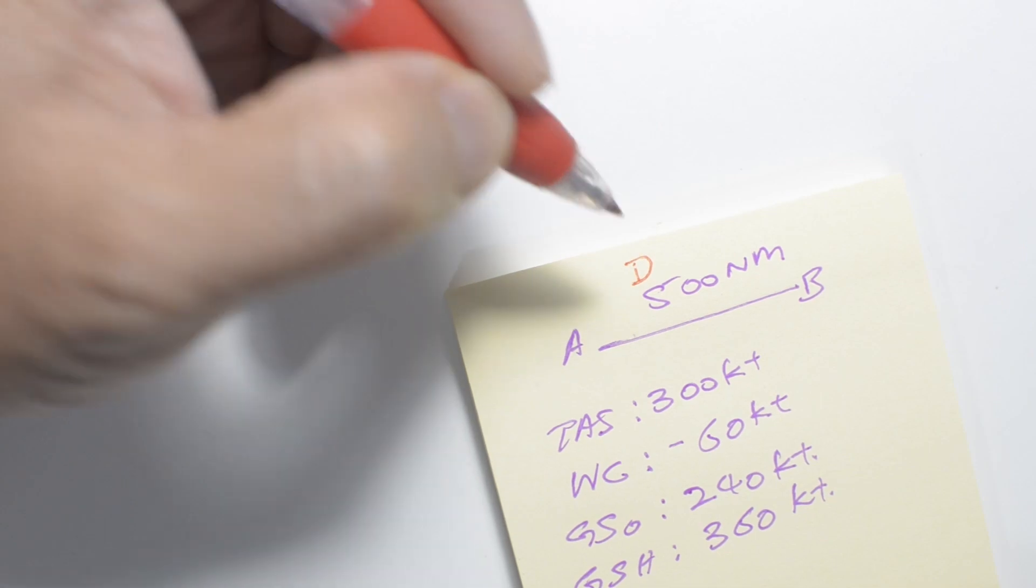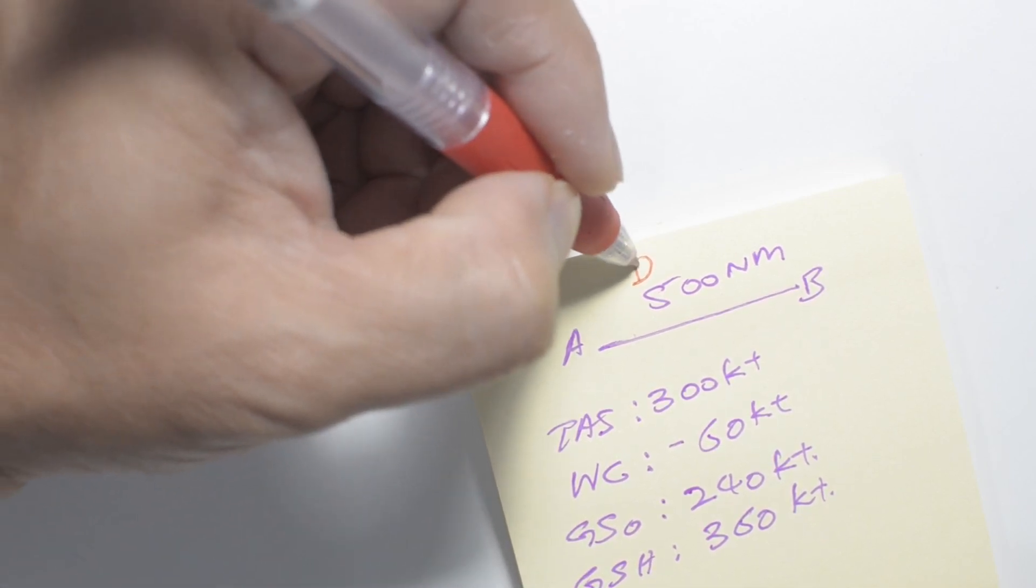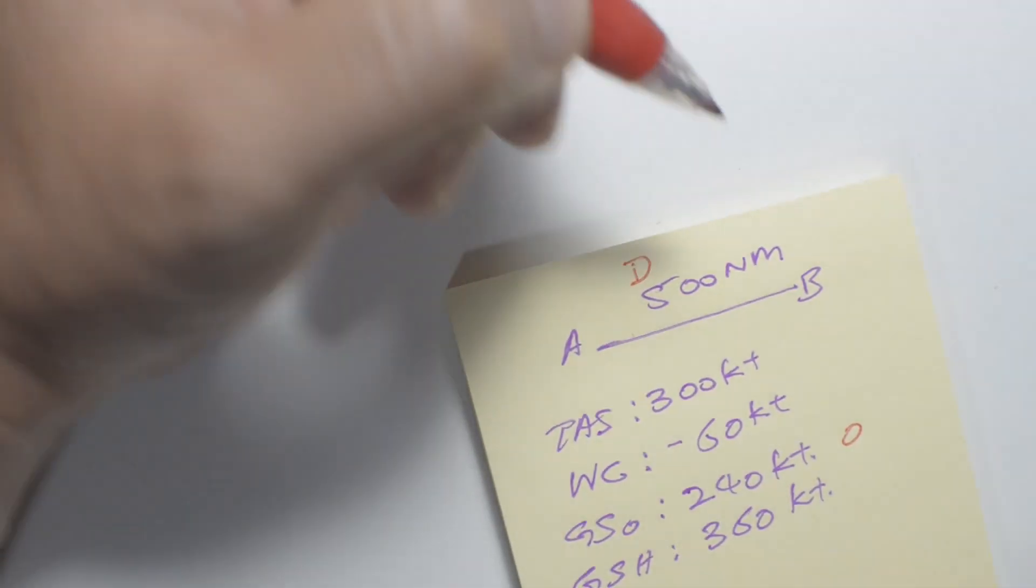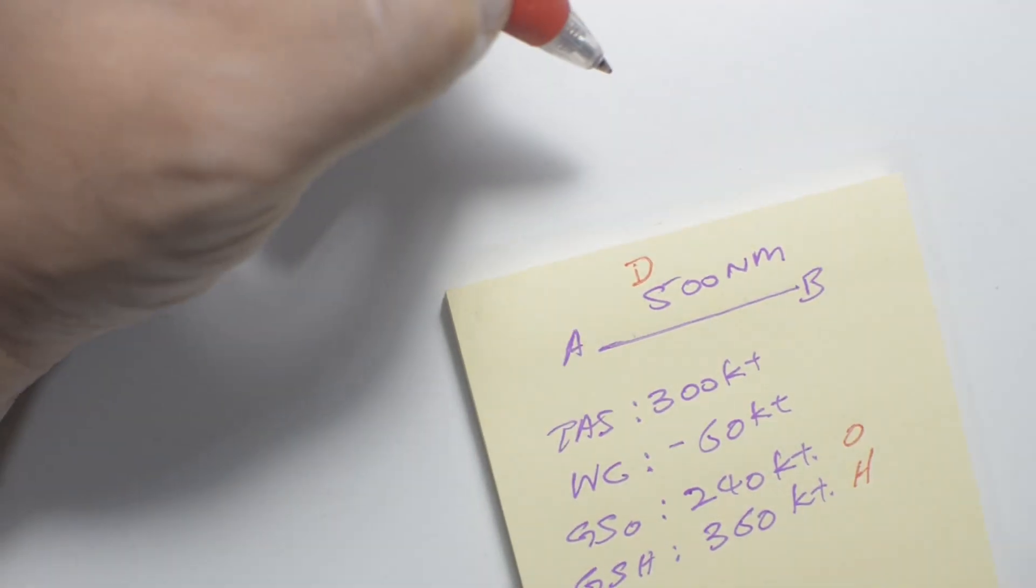So that gives me a ground speed out of 240 knots and a ground speed home of 360 knots. And we know that the distance A to B is represented by the letter D. This will be our ground speed out, this will be our ground speed home.